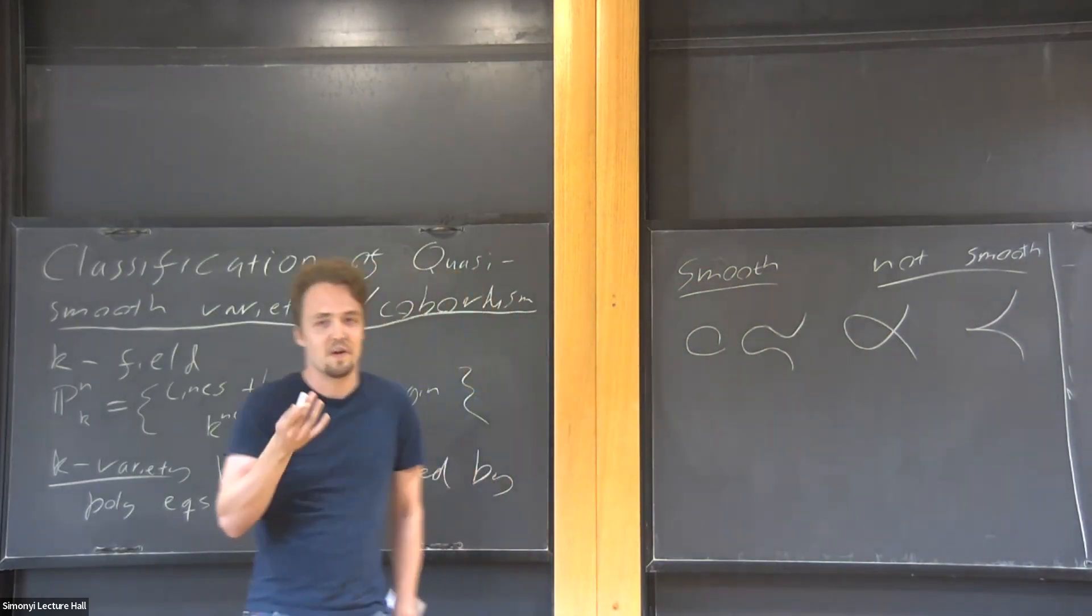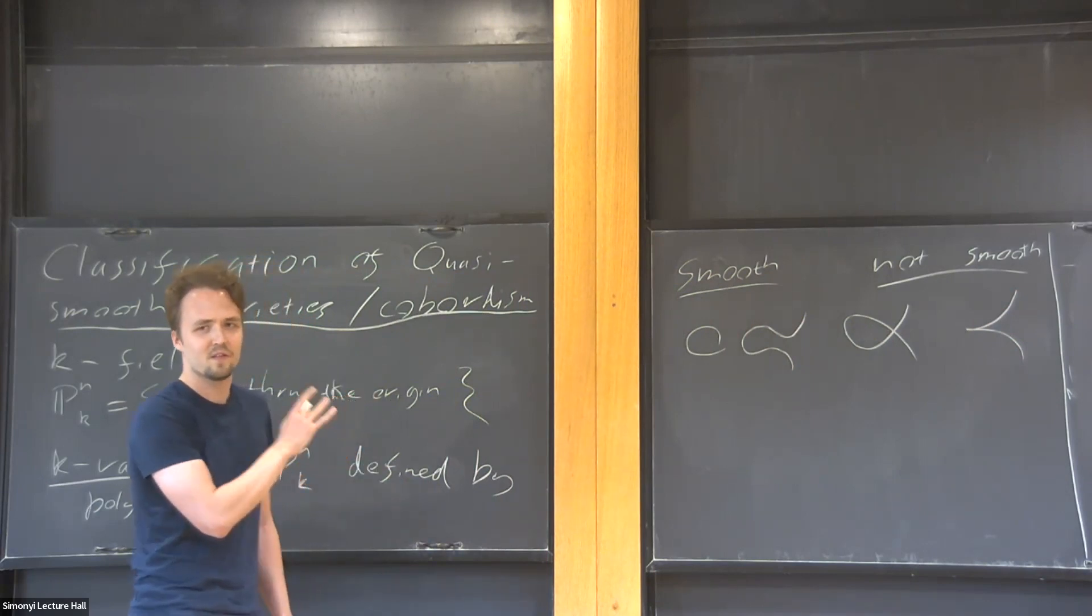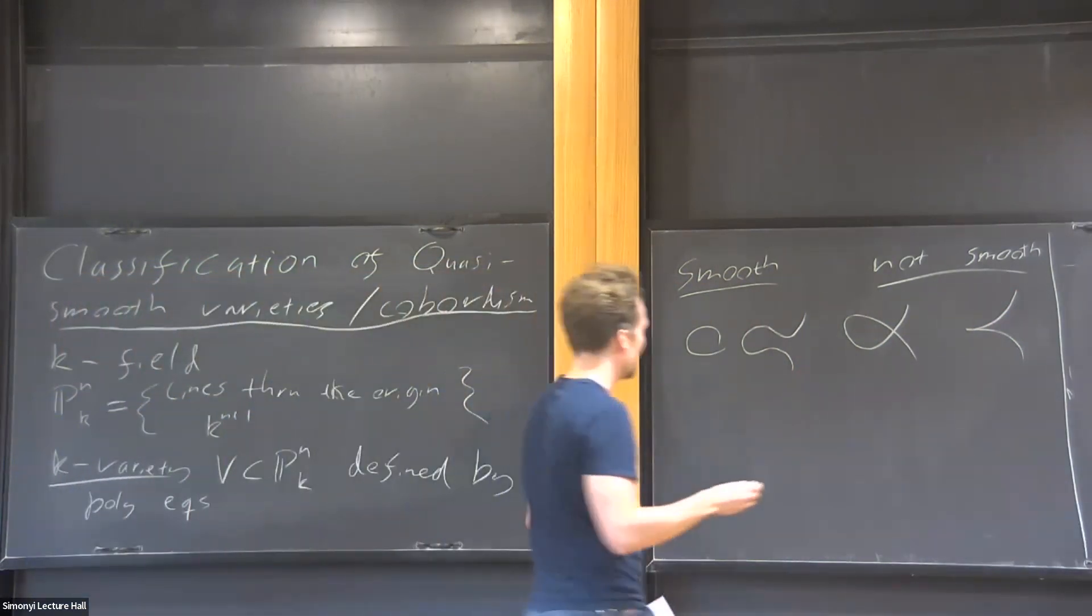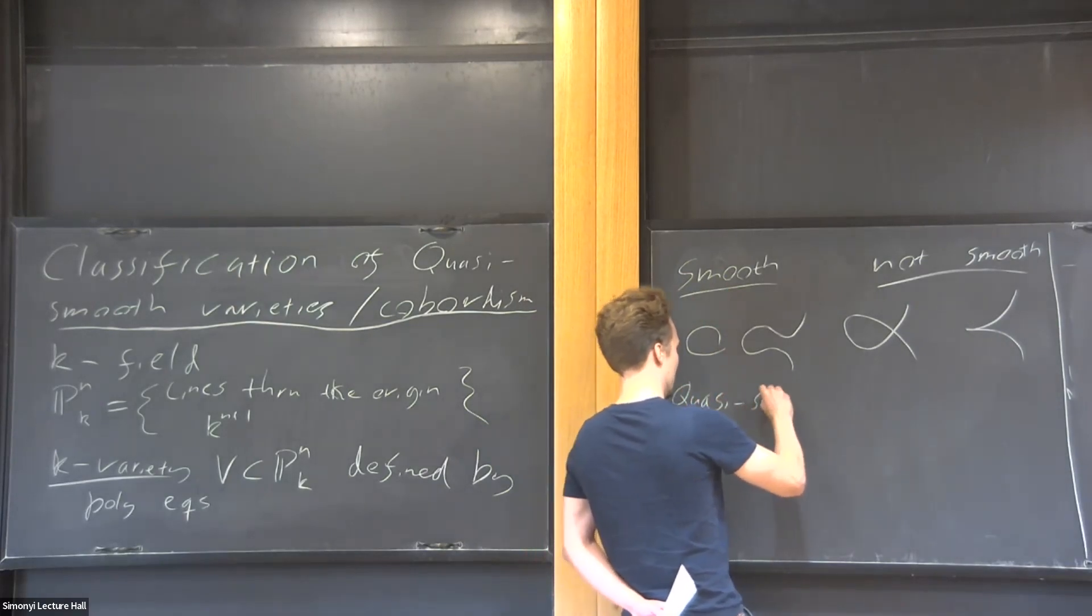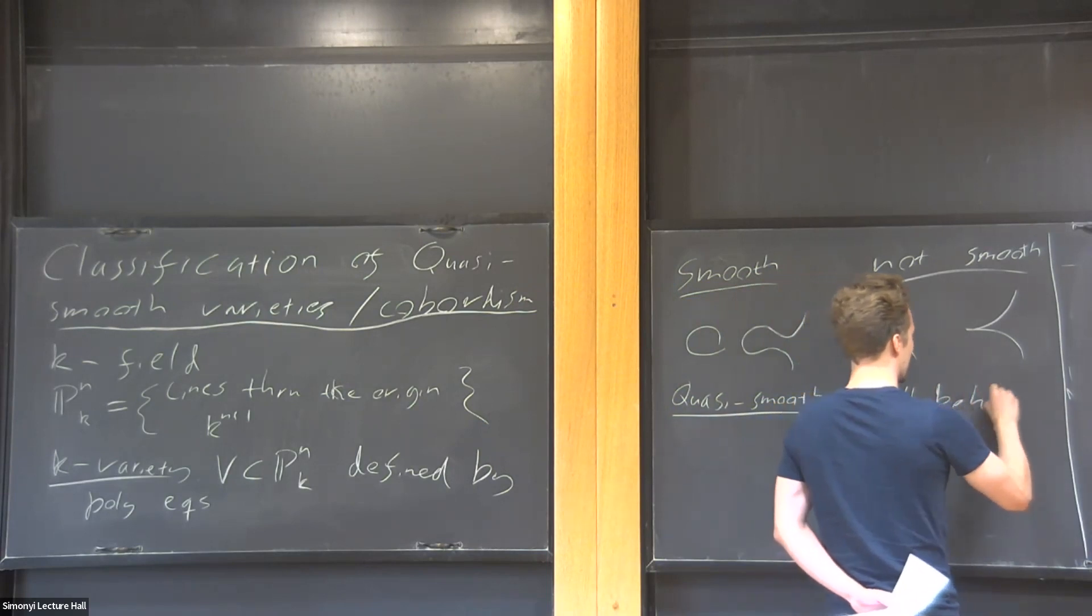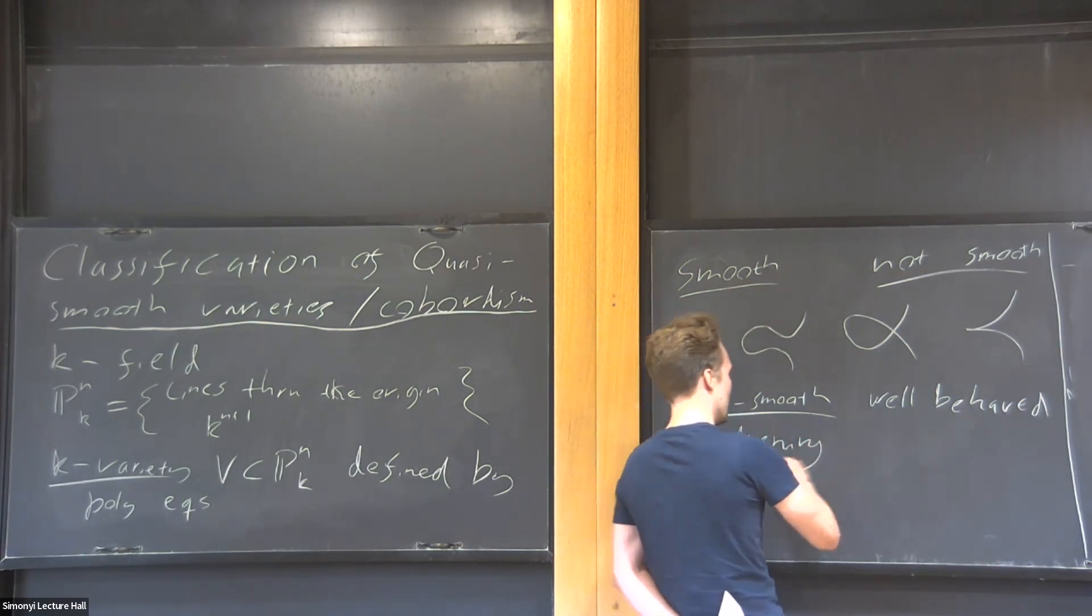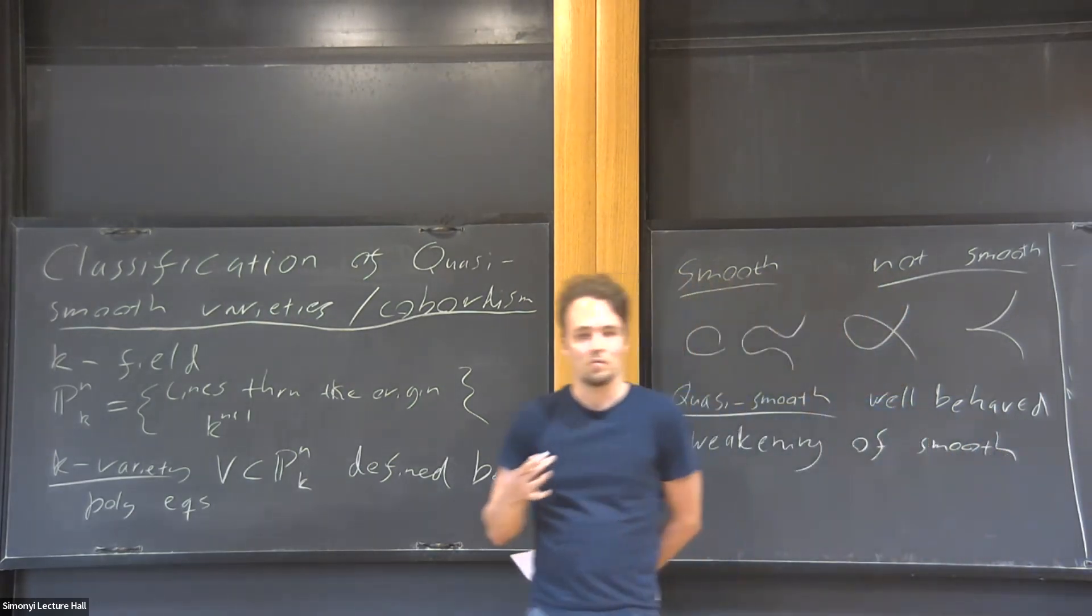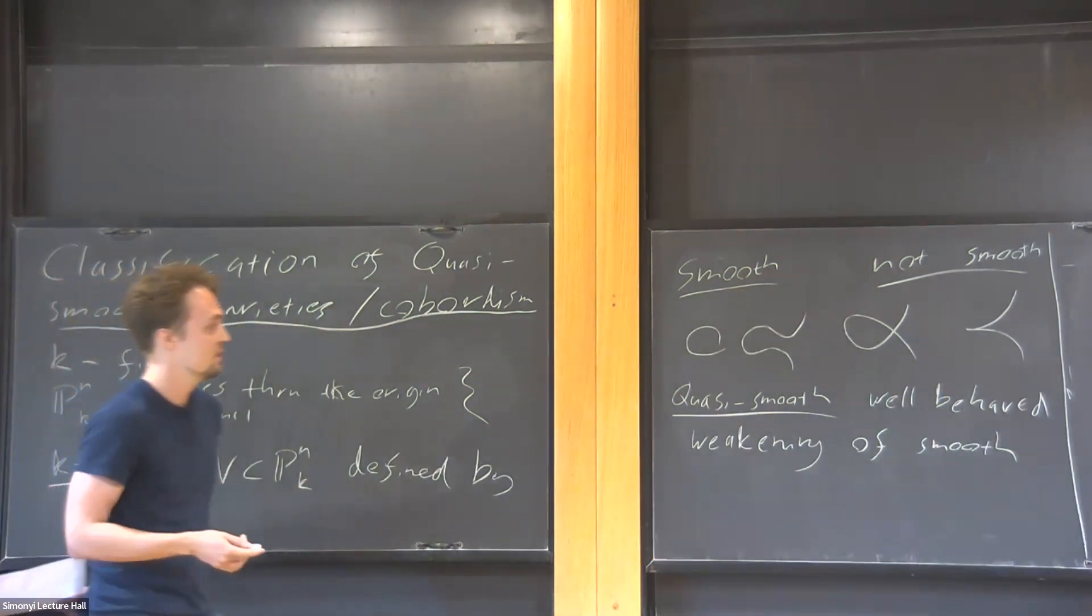Unfortunately, we cannot use smooth things today. This is why I have quasi-smooth in the title. What does quasi-smooth mean? It is a well-behaved weakening of being smooth, in the sense that they have nicer categorical properties than smooth things.